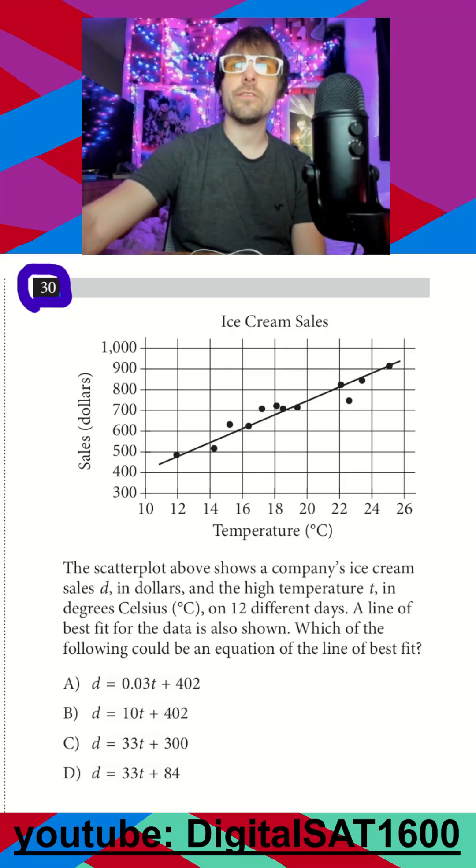We got another graph one here and remember my first inclination in these scatterplot ones is ignore your dots. We're focusing on our line and I want to take two points and I want to graph it.